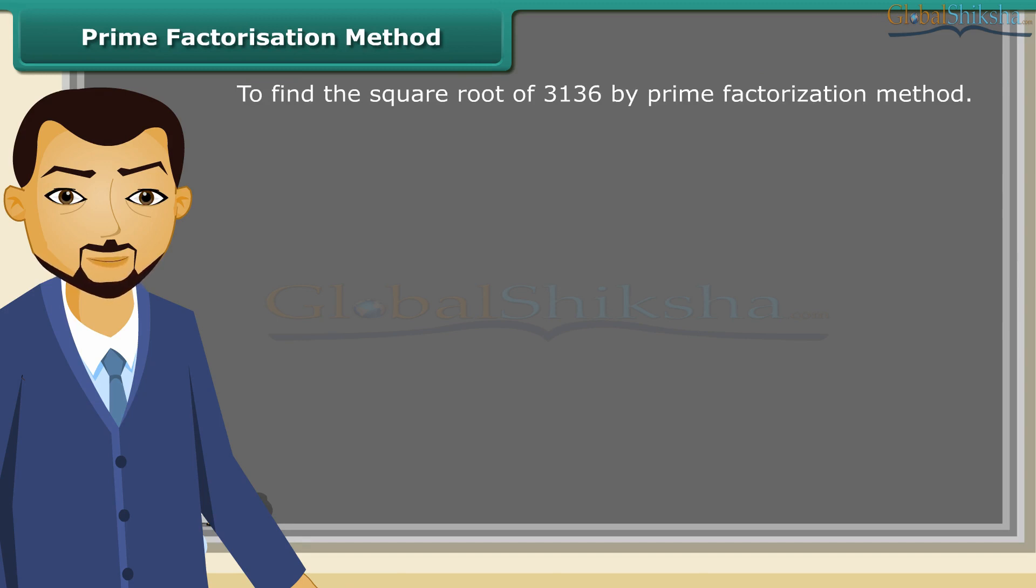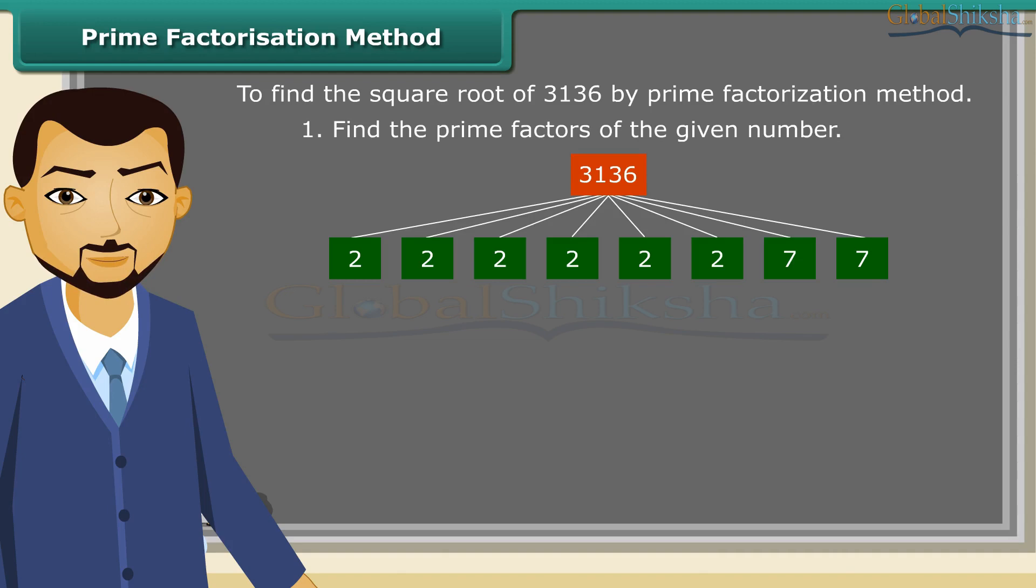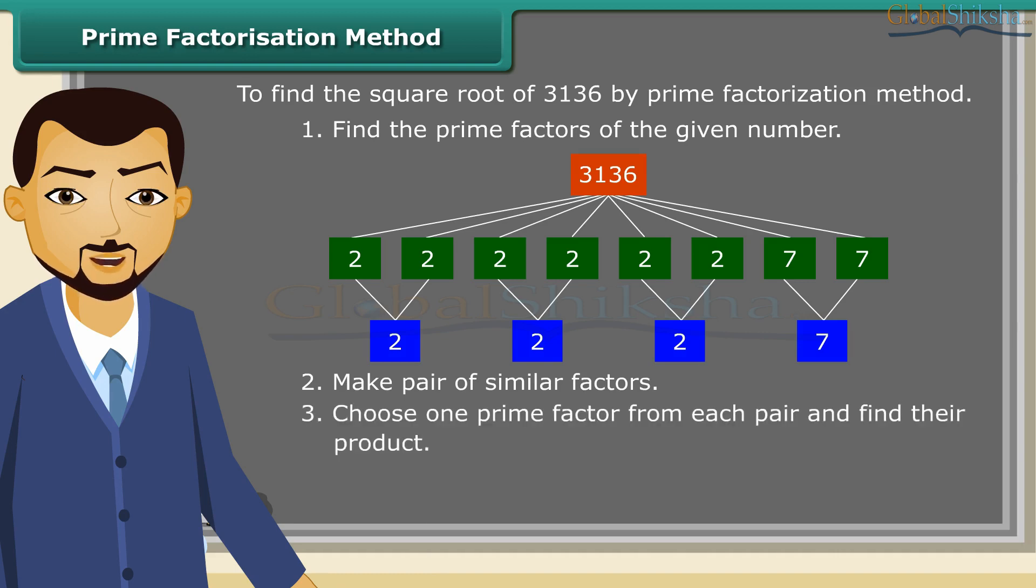Now, we will try to find the square root of a number by prime factorization method by following some steps. First of all, find the prime factors of the given number. Now, make pair of similar factors. After that, choose one prime factor from each pair and find their product. So, the product thus obtained is the square root of the given number.